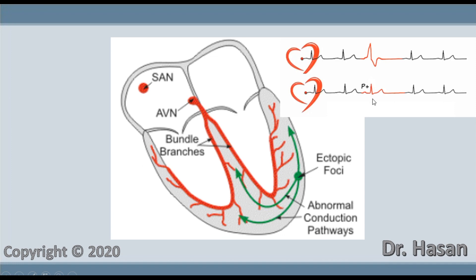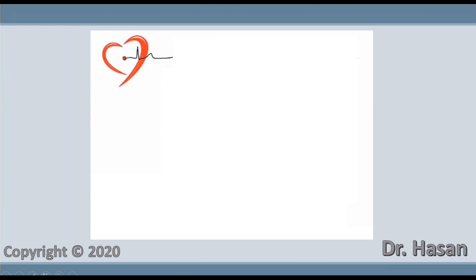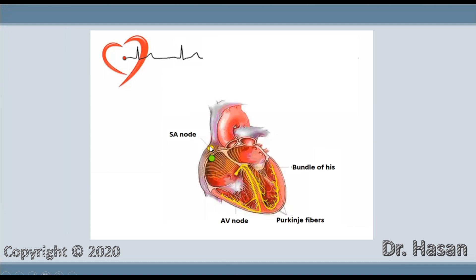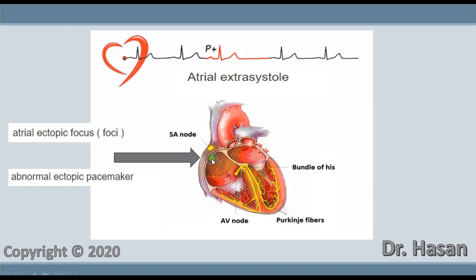For example, this is an atrial extrasystole and this is a ventricular extrasystole. In the schematically presented ECG, we see how first the pulse is generated from the sinus node, and then a certain focus appears in the atrium which generates the pulse earlier than the SA node would. This is called an atrial extrasystole — it is formed when an ectopic pacemaker appears in the atrium. You can call this focus an ectopic focus or ectopic pacemaker; they have the same meaning.